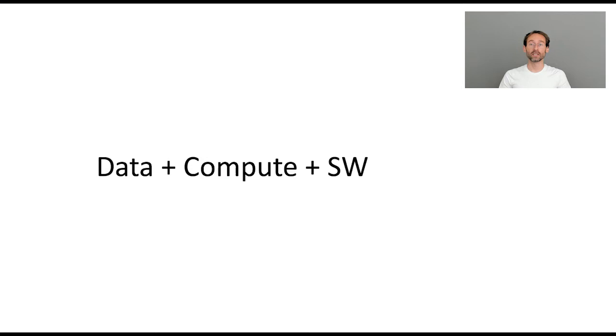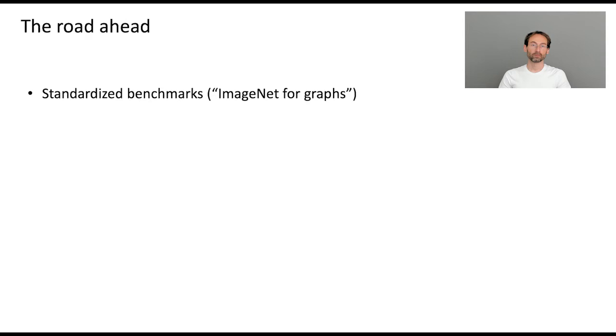There are three things that made deep learning happen and this holy trinity has been named an infinite number of times. And this is data, compute and software. In the case of computer vision, the data was ImageNet, a collection of millions of annotated images. The computing power came from graphics hardware, GPUs, that are very well tailored for convolutional neural networks. And the software was open source tools such as PyTorch or TensorFlow that has democratized deep learning. If we look at the situation in graph learning, we somewhat lag behind. We don't really have a standardized benchmark that is similar to ImageNet in the scale and complexity. And I should add that for graphs, the diversity of problems is much greater compared to computer vision.